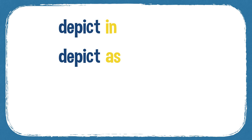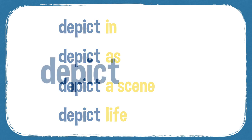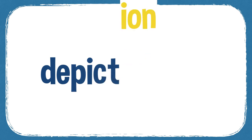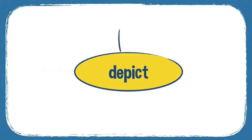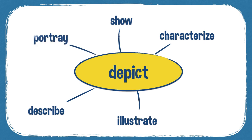Some collocations: depict in, depict as, depict a scene, depict life. Word forms include: depicts, depicting, depicted. Depiction is the noun form. Some synonyms for depict: show, illustrate, characterise, describe, portray, and represent.